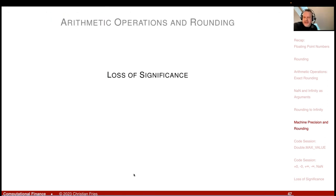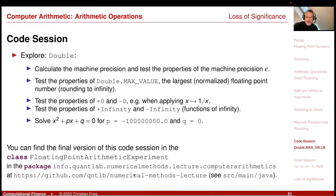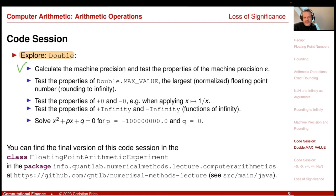My next topic is loss of significance — studying the effect that 1 plus epsilon equals 1. But before that, let me start another code session to explore the floating-point implementation, focusing on double precision.